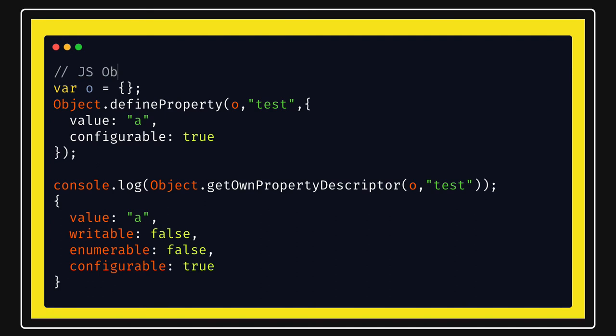Particularly on JavaScript objects we are going to talk about Object.defineProperty, what different methods are there, how we can iterate on an object using different methods, what is object property descriptor, how to create a new property in the object, and how to create an object.